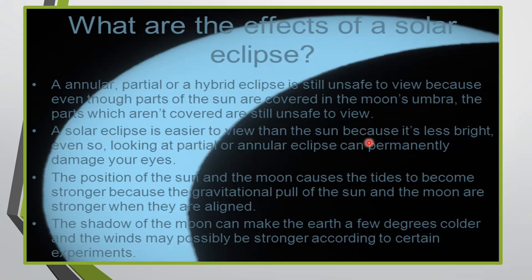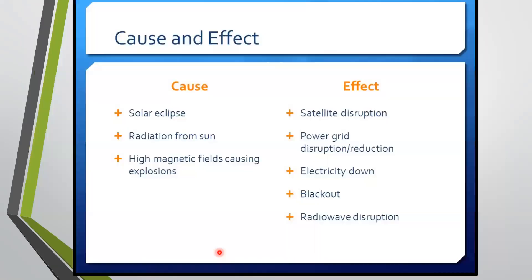A solar eclipse is easier to view than the sun because it's less bright. Even so, looking at a partial or annular eclipse can permanently damage the eyes. So be careful, students. The position of the sun and the moon causes the tides to become stronger because the gravitational pull of the sun and the moon are stronger when they are aligned. The shadow of the moon can make the earth a few degrees colder and the winds may possibly be stronger, according to certain experiments.